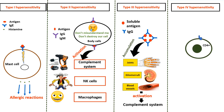Unlike other types, hypersensitivity reaction type 4 is not antibody-mediated but mainly cell-mediated immunity. In this type, the T helper cells, especially CD4 cells, recognise intracellular antigens such as fungi or Mycobacterium tuberculosis.